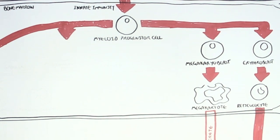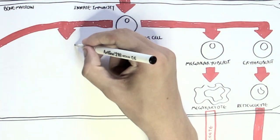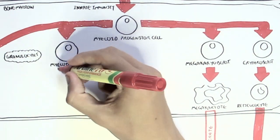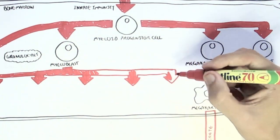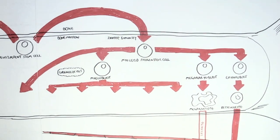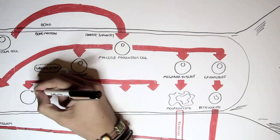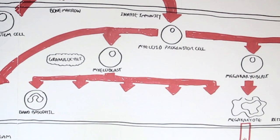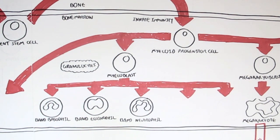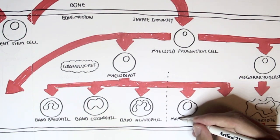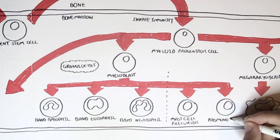It should be noted that I'm not including all the names of every cell type that gives rise to each immune cell — only a couple for simplicity. The myeloid progenitor cell can also give rise to what's called the myeloblast, and the myeloblast can give rise to a variety of cells. These include a group known as granulocytes, which are cells that contain granules — hence the 'granulo' prefix. The three granulocytes produced in the bone marrow are the band basophil, the band eosinophil, and the band neutrophil. Other cells the myeloblast produces that are not granulocytes include the mast cell precursor and the promonocyte.